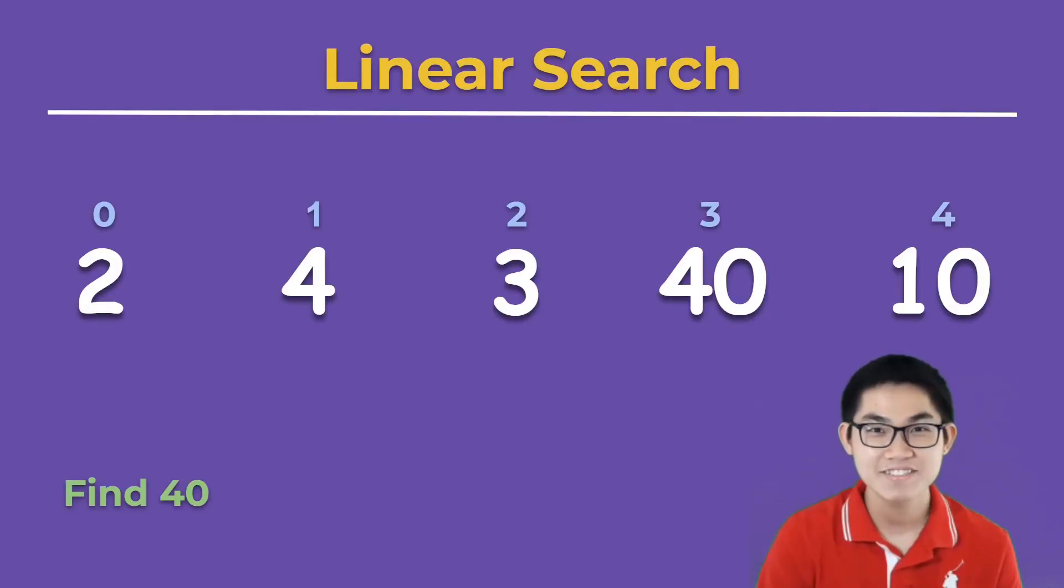Hi guys, in this video I'm going to show you how to use linear search to find if a number exists in an array or not. Let's try to find number 40. We're going to start at the beginning of the array. 2 is not 40, this is not 40, that's not 40. Now we found 40, so once we find 40 you can either return true or just return number 3, which is the index or location of number 40.